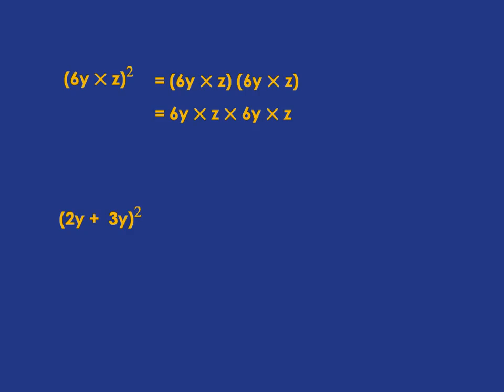We get 6 times 6 is 36, and then we get y times y, y squared, z times z is z squared. So actually we can see that if we had 6y multiplied by z all squared, everything in that bracket is just going to be squared. So 6 squared is 36 and then of course you'll get y squared and z squared. Very easy, just everything has to be squared.